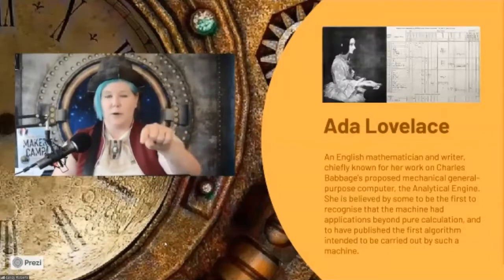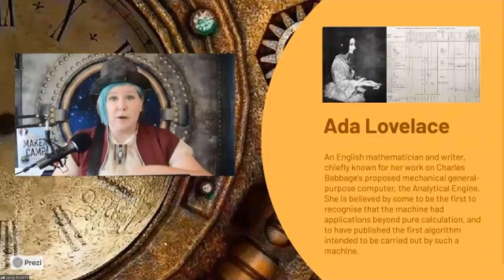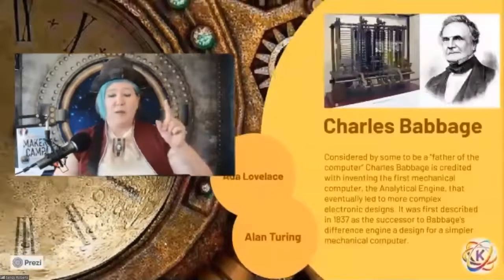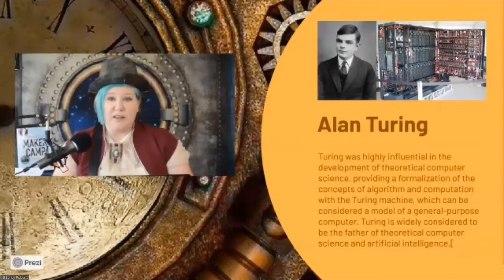So if you want to be like Ada, hour of code dot org — go online and learn coding. Come see me at the library; I have hour of code every Monday. This brings me to Alan Turing. Technically not a Victorian because his work was done around 1912, but he took everything that Babbage and Lovelace did and came up with the first real electric computer. He is generally considered the father of computer science and artificial intelligence. So if you've got an Alexa or any AI device sitting around the house, you owe it to Alan Turing.